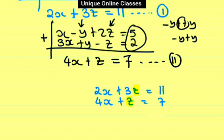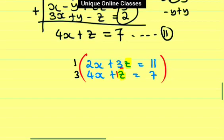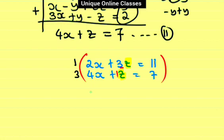Let's eliminate z. We have coefficients 3 and 1. We multiply equation 2 by 3 to match coefficients: so 1 times 2x gives 2x, and 1 times 3z gives 3z, equal to 1 times 11 which is 11. Then from the other equation multiplied by 3: we get 12x plus 3z.